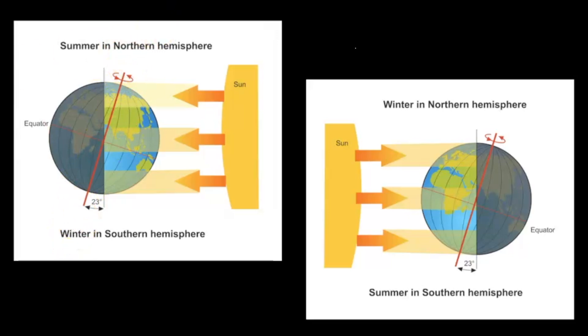If we look at other places in the solar system, Mars has a similar axial tilt and it also has seasons as well.